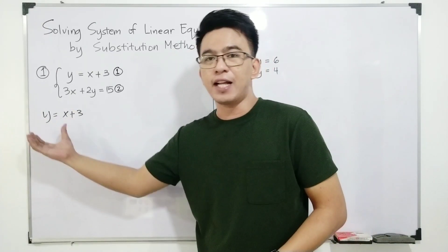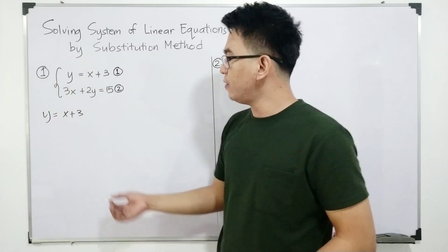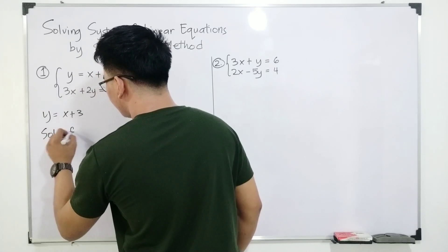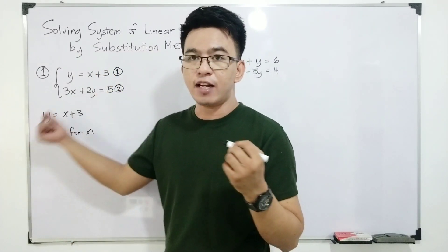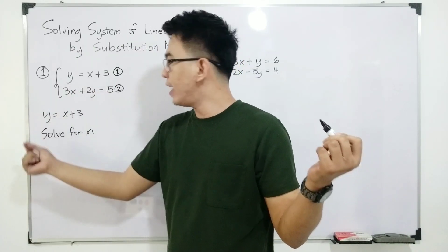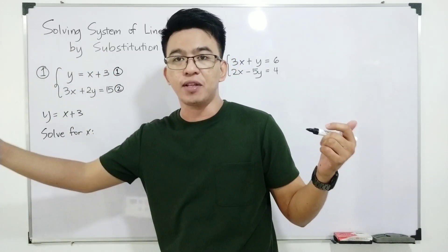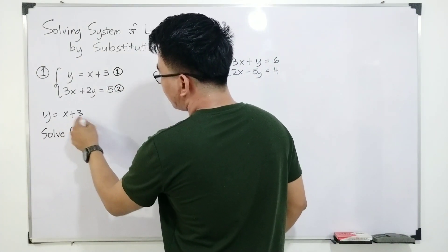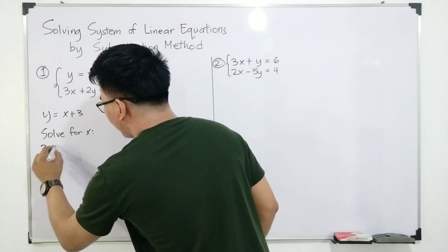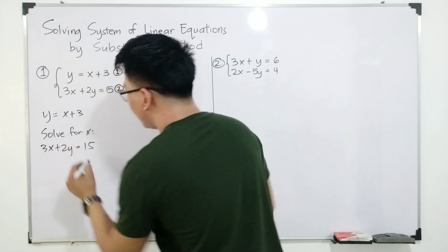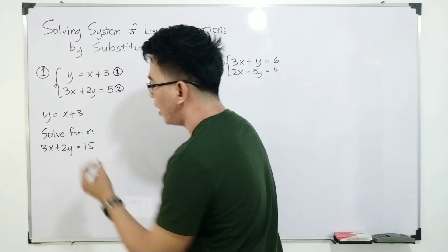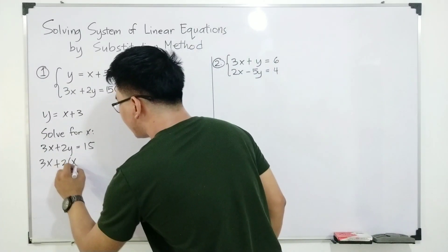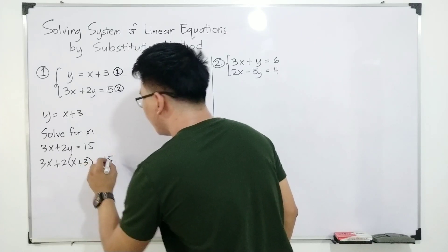Some equations don't have the variable isolated yet. But here, we can directly use this in the second equation to solve for x. If we already have the isolated variable y, then x is what we find using the next equation — not equation number one again. So we will substitute x + 3 for y in equation two. It will become 3x + 2(x + 3) = 15.